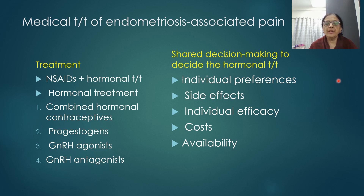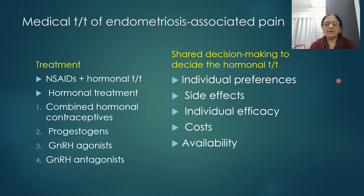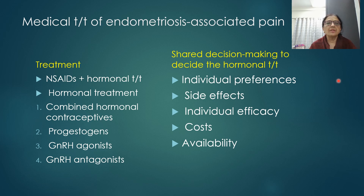This topic can be divided into three compartments: treatment modalities for pain, treatment modalities for infertility, and treatment for special situations. This division provides clarity of thinking. First, how to deal with pain; second, how to improve fertility; and third, special situations.